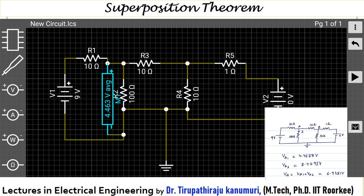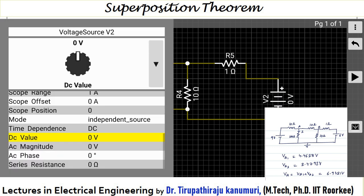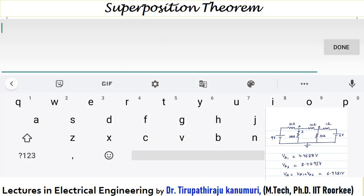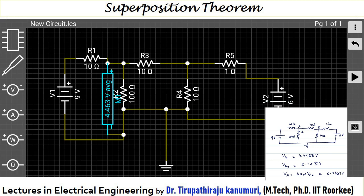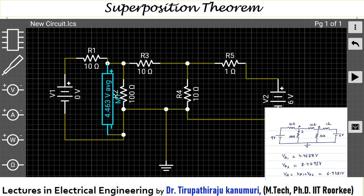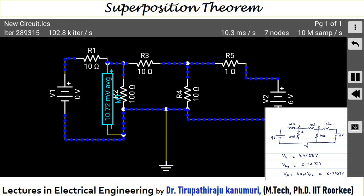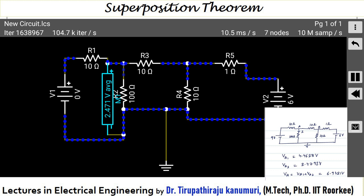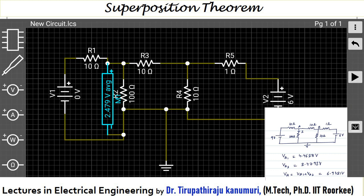Now let us see the effect of only 6 volts acting alone with 9 volts set to 0. I double-click the 6 volt source, confirm it as 6 volts, and change the 9 volt source to 0. I run the simulation again. Once it stabilizes, I press pause and rewind — it shows 2.479 volts. Theoretically we also got 2.479 volts, matching exactly. The effect of each source acting separately matches the theoretical values.